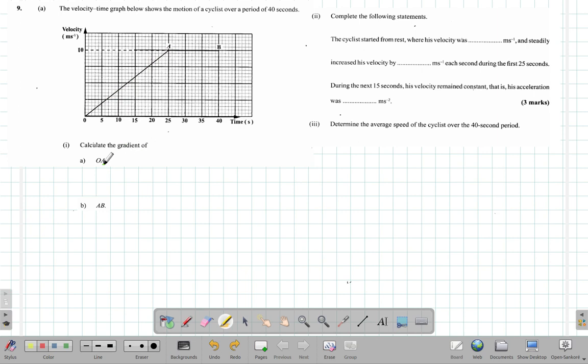Calculate the gradient of OA. The gradient gives you the slope, how steep the line is sloping. You're looking at how much the line rises compared to how much it runs horizontally. One way to calculate the gradient...